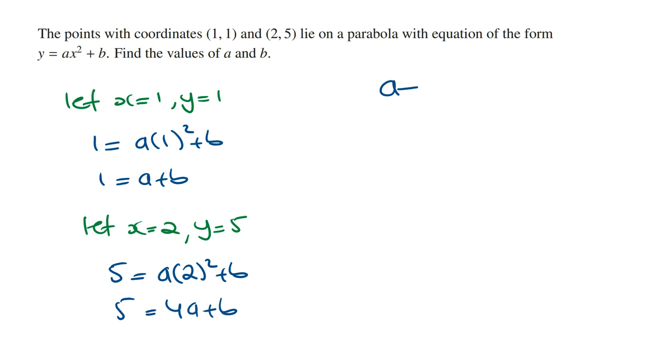And so rewriting this, we've got a + b = 1 and 4a + b = 5. So this is our first equation, this is our second equation.